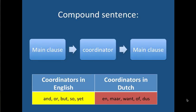The structure is: main clause, coordinator, main clause. Coordinators in English are: and, or, but, so. Coordinators in Dutch — and this is quite a short list — are: 'en' (and), 'maar' (but), 'want' (because/for), 'of' (or), and 'dus' (so). If you use these coordinators, then at either side of them you will have a main clause, and the word order in the main clause is like the word order in the simple sentence — verb in second or in final position. Compound sentences are not difficult; people do them without any problem at all.